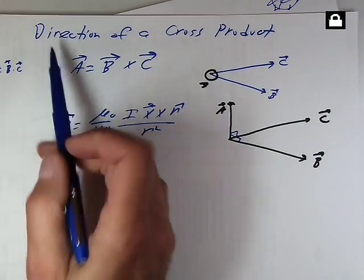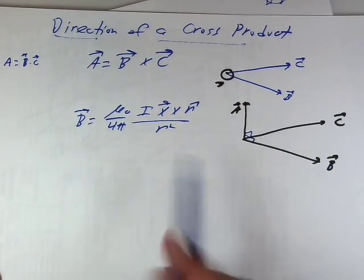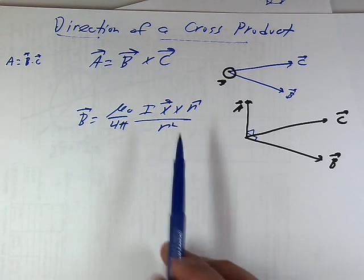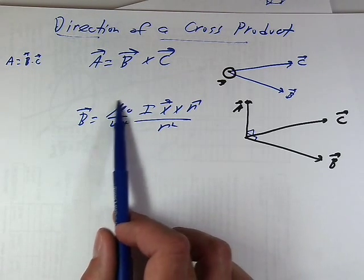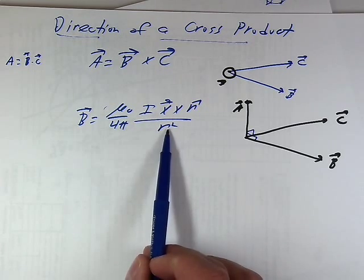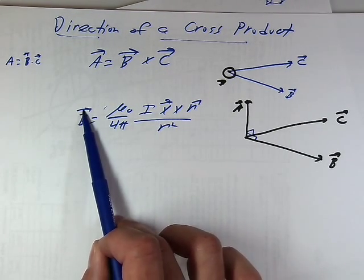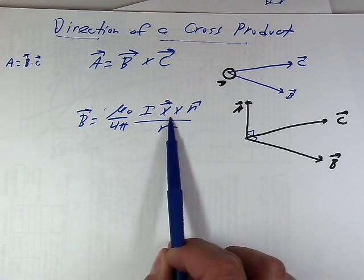So why are we so interested in the direction of a cross product? Because the Biot-Savart law, which is our core law for where magnetic fields come from, says there's a cross product in there. These are all just a bunch of constants - mu naught, 4 pi, and i, and r squared - to scale things up as a unit. But the direction of this B, which is a vector, comes from the ultimate direction of this cross product right here.